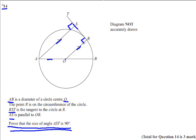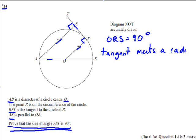So ORS or SRO is 90 degrees as well because point R is where a tangent meets the radius and they always make a 90 degree angle. That's one of your circle theorems. So ORS is 90 degrees, tangent meets the radius is our reason.